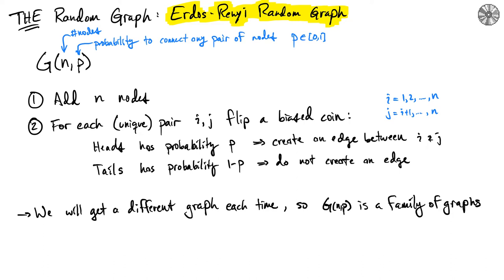The first random graph we will consider is the default random graph, simply because it may be the most obvious choice. This is also called the Erdős-Rényi random graph, based on who originally proposed it.